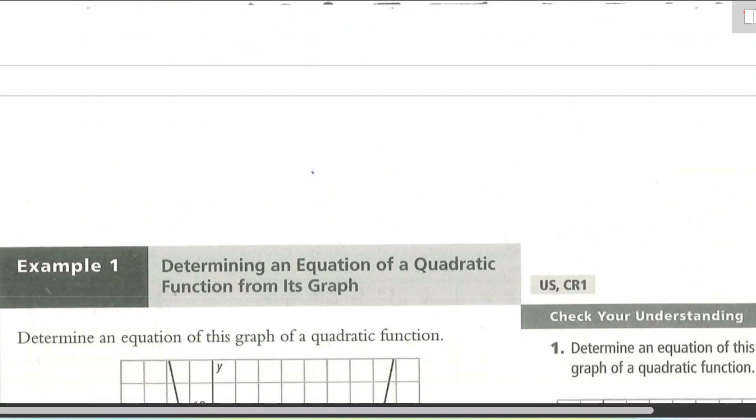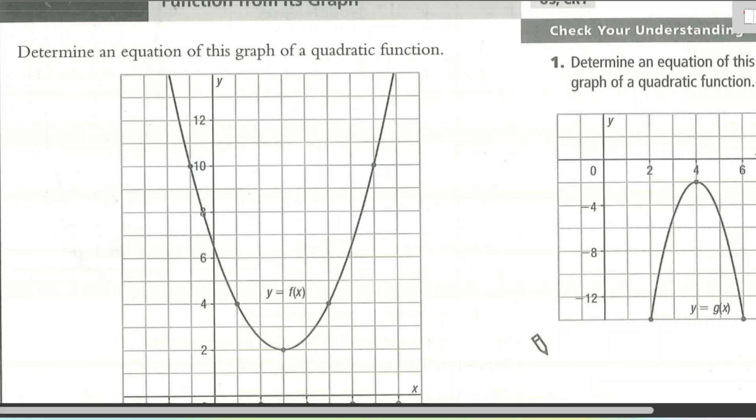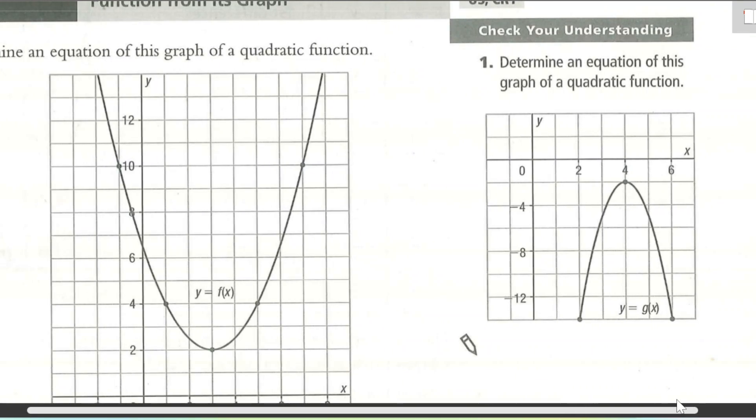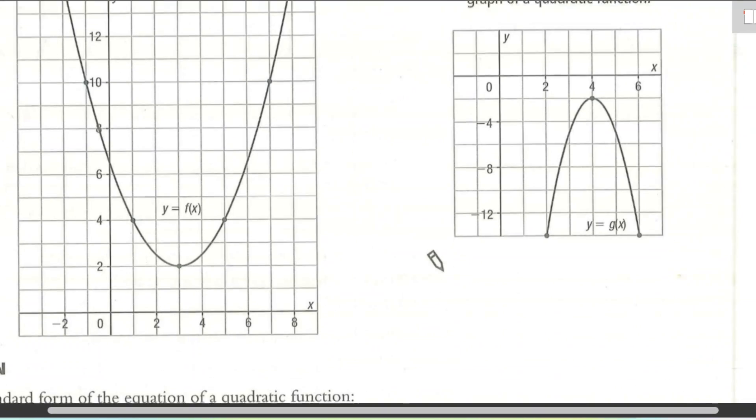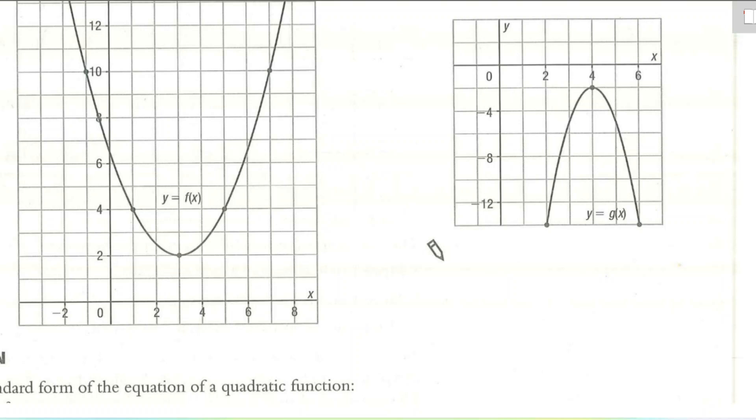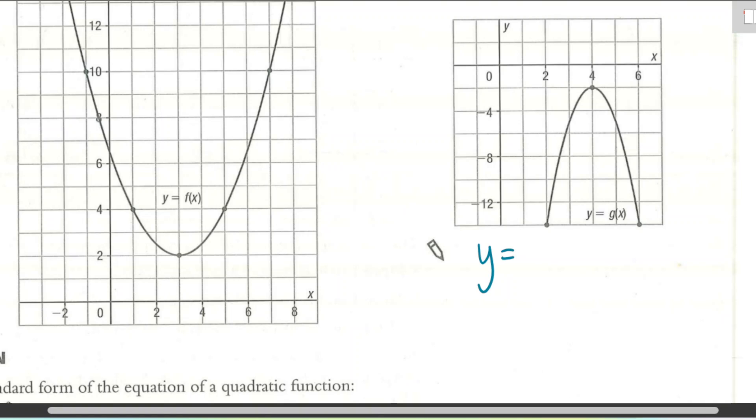Let's go ahead and do this question. It says, determine the equation of this graph. Okay, so let's write out our standard form equation. It's y equals A, x minus P, all squared plus Q. Now, first thing we have here when I look at this graph is I notice the vertex.